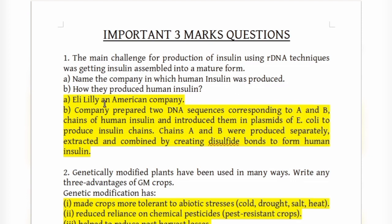Eli Lilly prepared two DNA sequences corresponding to the A and B chains of human insulin and introduced them into plasmids of E. coli to produce the insulin chains separately.